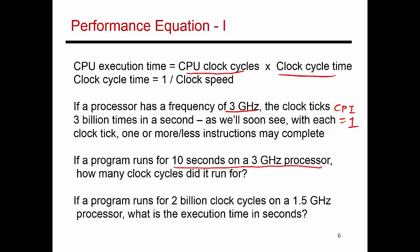So essentially, in one second, you have 3 billion clock ticks. In 10 seconds, you have 30 billion clock ticks. So it ran for 30 billion clock cycles.